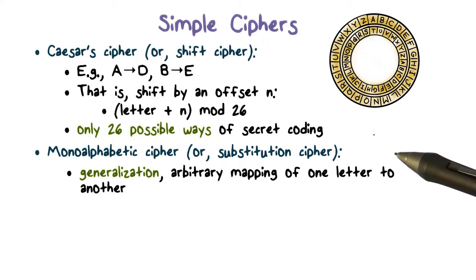A generalization of this scheme is to allow arbitrary mapping of one letter to another. That is, we no longer require that a letter is mapped to another letter by always the fixed amount of shift. Now, of course, we need to avoid that two letters are being mapped to the same letter. The mapping, meaning how each letter is mapped to another, is now the secret key.